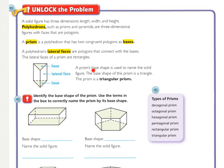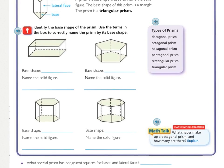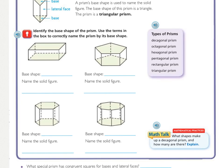A prism's base shape is used to name the solid figure. The base shape of this prism is a triangle, so the prism is a triangular prism. We are going to identify the base shape of some prisms, and we're going to use the terms in this box on the right to correctly name the prism by its base shape.